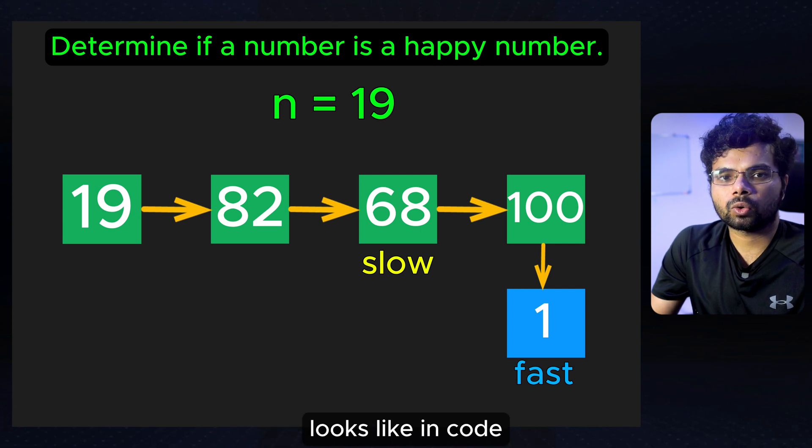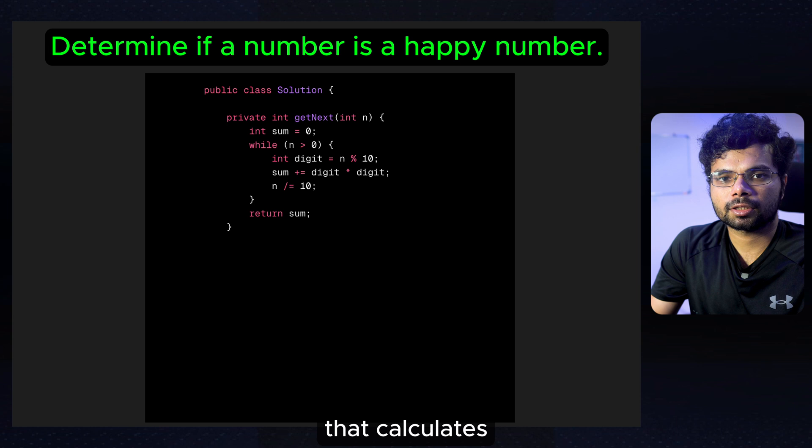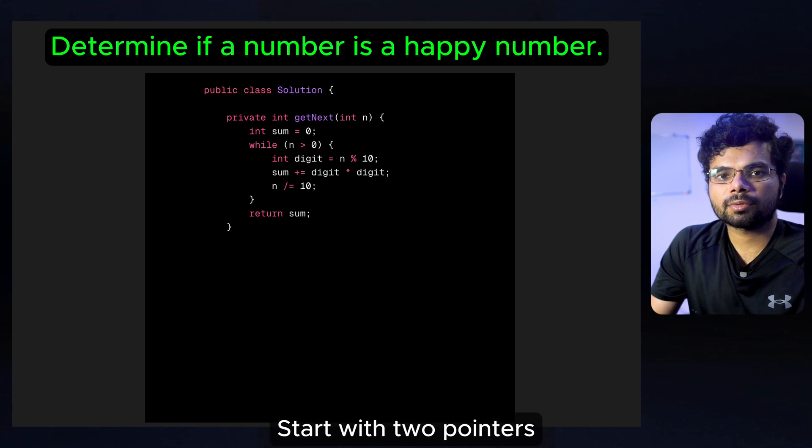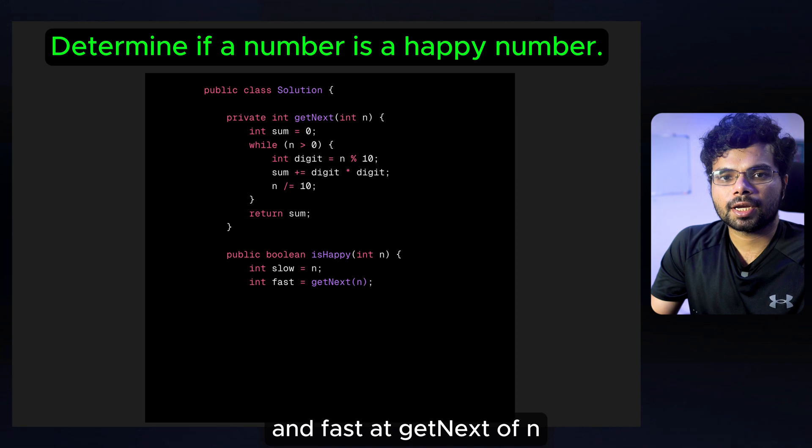Here is how the approach looks like in code. First, define a helper function, getNext, that calculates the sum of squares of digits. Start with two pointers, slow at the original number and fast at getNext. Inside a loop, move the slow pointer one step at a time, which means sum of squares of digits once.